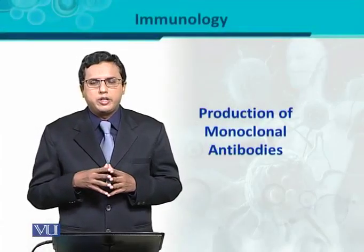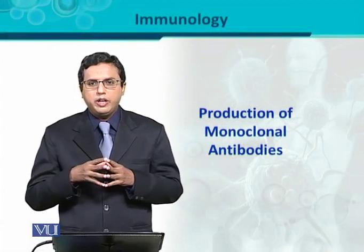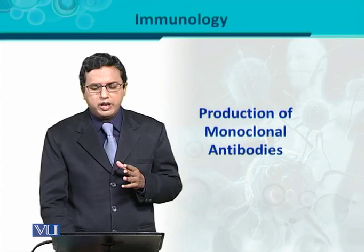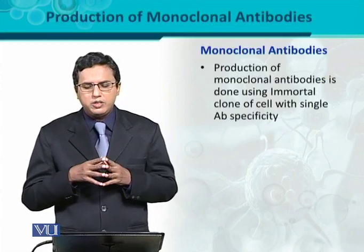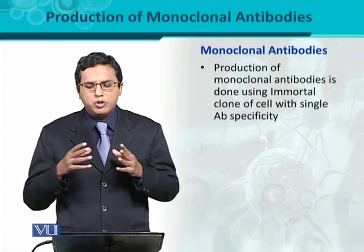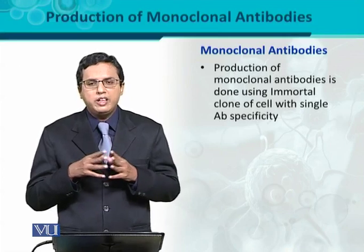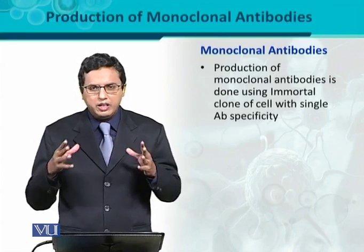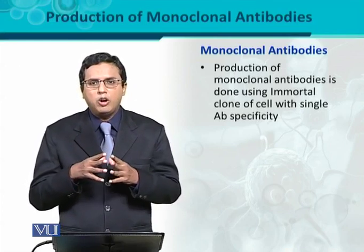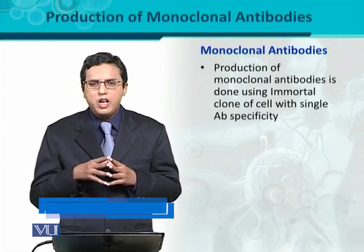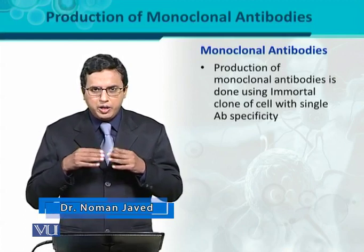Production of monoclonal antibodies — in contrast to polyclonal antibodies, the production of monoclonal antibody is different because in this case the antibodies are going to be produced from a single clone of B cells. For that particular purpose we have to produce the monoclonal antibody using an immortal clone of cells with single antibody specificity. B cells jo single specificity ke saath hain, single clone of antibody producing B cell — us ki ability hai immortal clone, it should be an immortal clone.